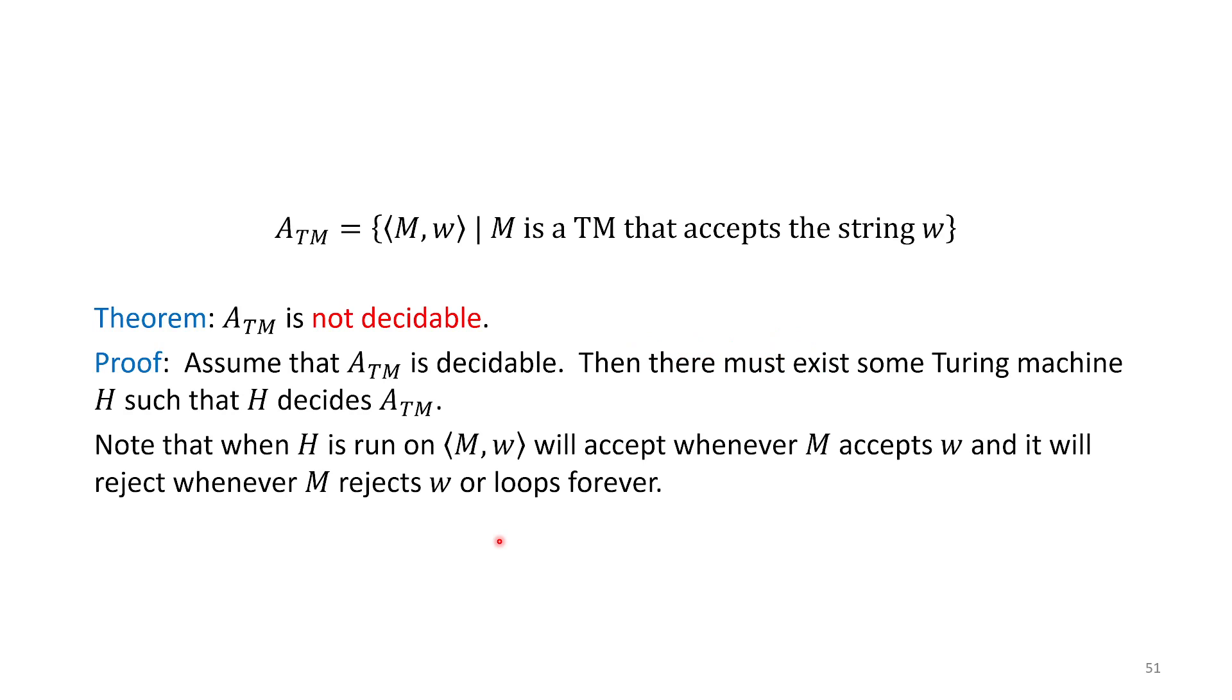Let's prove that ATM is not decidable. Just like Cantor did with diagonalization, we're going to assume it is decidable to get a contradiction. Assume ATM is decidable. If it is decidable, then there must be some Turing machine that decides it. We'll call it H to give it a name.